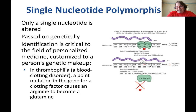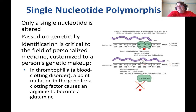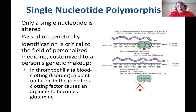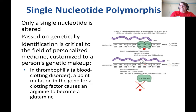Hemophilia, another blood clotting disorder, is also usually a single nucleotide polymorphism. Sickle cell anemia is a single nucleotide polymorphism in one piece of the hemoglobin protein. These are point mutations in genes for a particularly important protein — often in the active site of an enzyme. In sickle cell, the codon for arginine becomes a codon for glutamine, and they behave very differently, resulting in a non-functional protein.